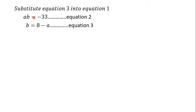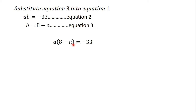I substitute b equals eight minus a into equation two, which is a times b equals negative 33. Wherever I see b I replace it with eight minus a. So it becomes a times (eight minus a) equals negative 33. Because a is a single term multiplying a binomial, the binomial eight minus a is placed in a bracket — as explained in the video on algebraic expressions.